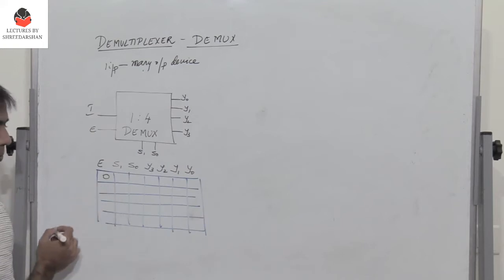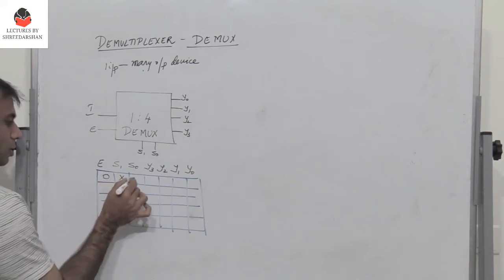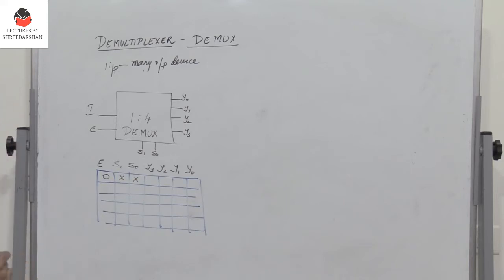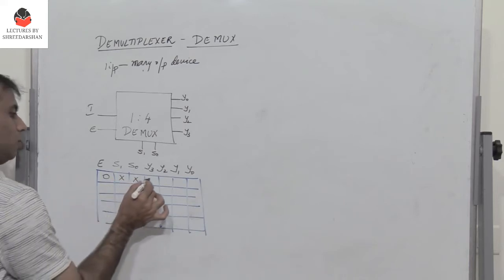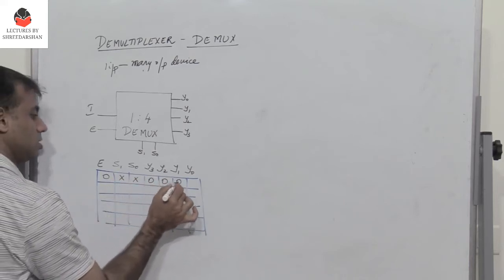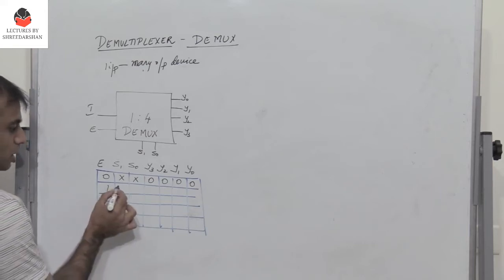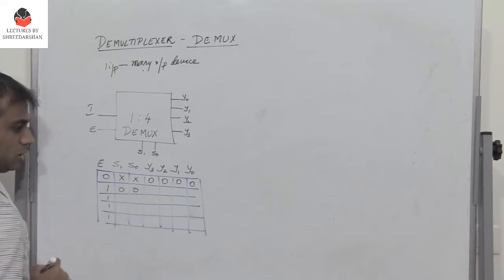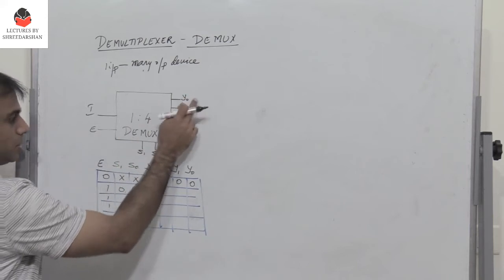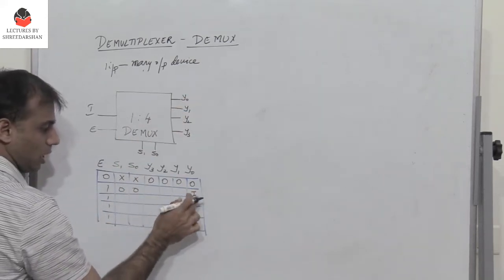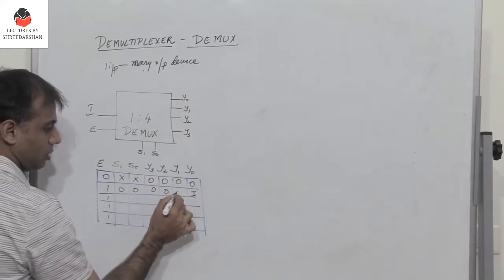So now how do I complete the truth table? If enable is 0, irrespective of the condition of s1 and s0, the output will always be 0. So the demux is disabled. And then if the enable is 1, only then the demux operates. So now if s1 and s0 is 0, the input i appears at y0. So i appears here, the remaining 3 are 0.